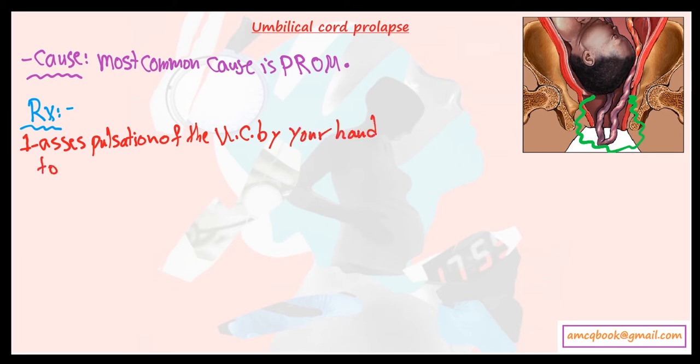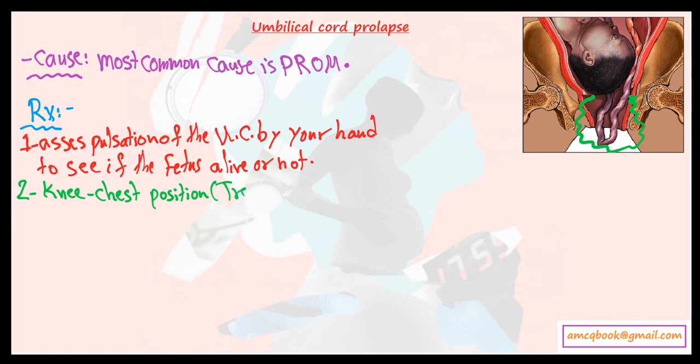The second step will be knee-chest position, which is called Trendelenburg position. That will help make the presenting part retract back to the uterus and decrease the pressure over the umbilical cord in order to prevent ischemia for the baby.